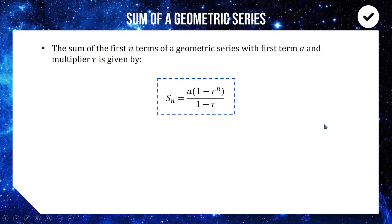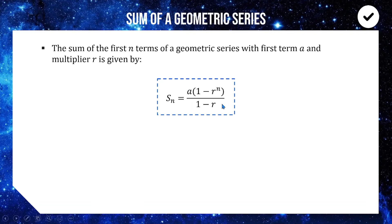This formula is on your reference sheet — you just need to know when and how to apply it. There is an alternative form on the reference sheet with 1 and r^n swapped. They are essentially two versions of the same formula doing the exact same thing. For today I'll just use this version as it gives the right answer in all situations.